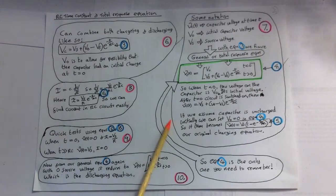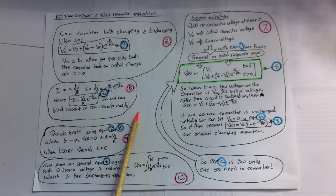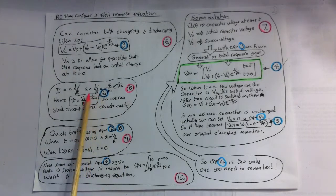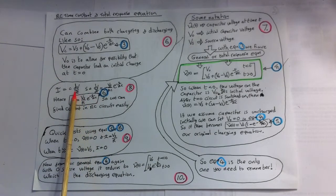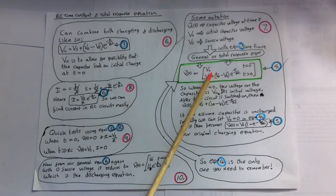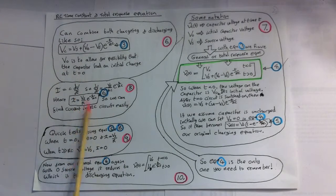It's worth noting at this point, we can also get the current by using the fact that for capacitors, the current through them is I equals C dV by dt. So if we use calculus and differentiate this equation 4, we'll end up with this.